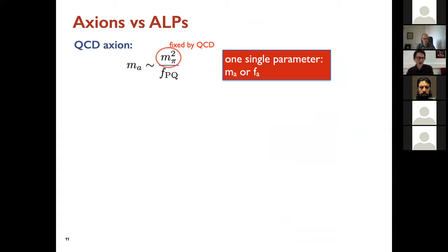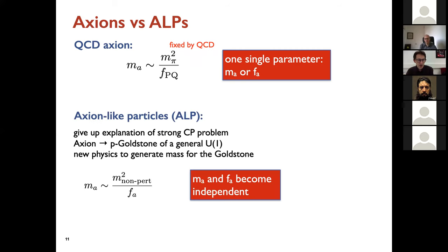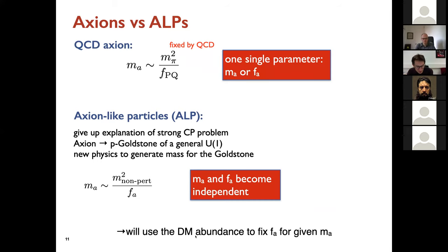In the case of the QCD axion, the energy scale is fixed by QCD, so there is only one free parameter — you can choose either the mass or the Peccei-Quinn symmetry breaking scale. In our more general case, we take them as independent. So we have two free parameters: mass and energy breaking scale. In fact, we can use the requirement that this particle is dark matter to fix one of them — we fix FA by requiring that for a given mass, this particle accounts for all dark matter in the universe.